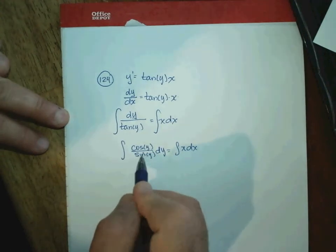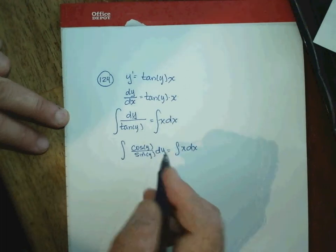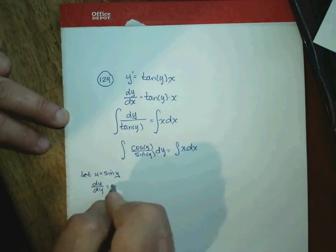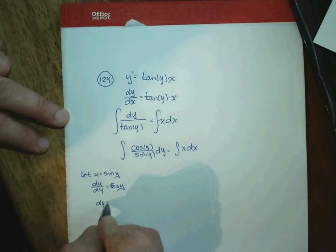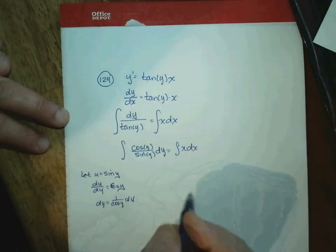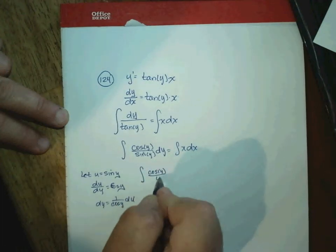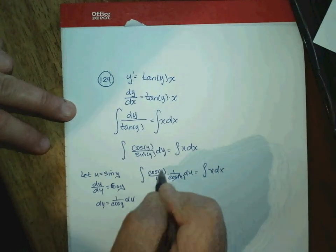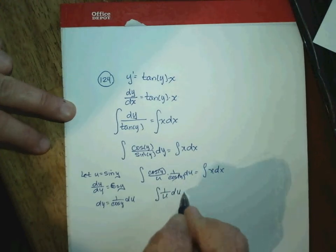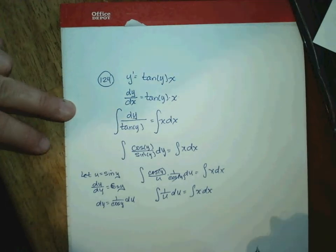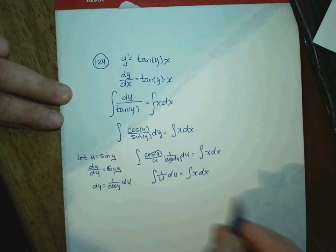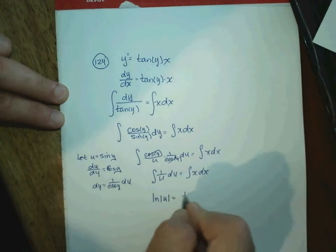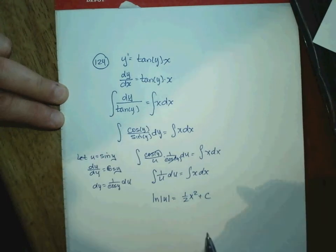Letting u = sin(y), the derivative of u is cos(y) dy, so dy = du/cos(y). Substituting in, the cosines of y cancel, and on the left we're integrating 1/u. On the right, we're just integrating x. These are two simple integrals: the integral of 1/u is the natural log of |u|, and the integral of x is ½x², plus the constant of integration.